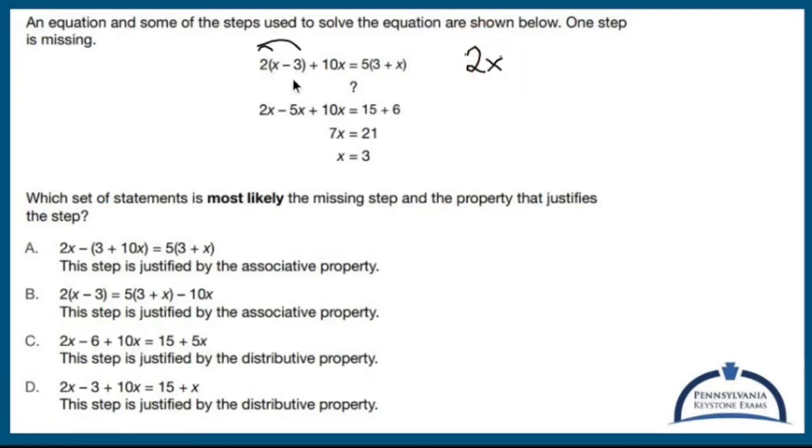2 times x is 2x. 2 times negative 3 is minus 6. And then we have plus 10x equals 5 times 3, which is 15. Distributive property again. 5 times x is 5x.